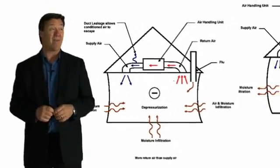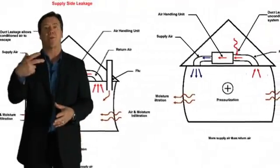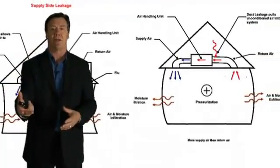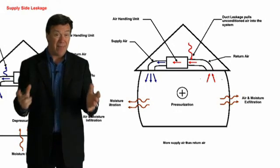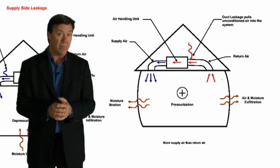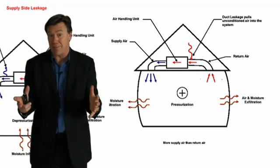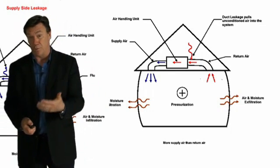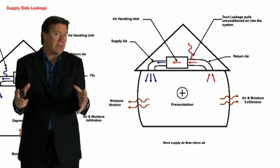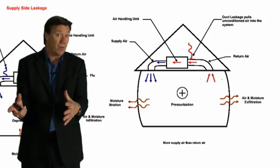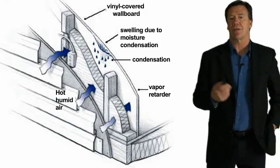Likewise, if we have return air duct leaks located outside the building envelope, just the opposite happens — the home is under a positive pressure. That's a problem in the winter months. Humidified air inside the home is forced out through all the cracks and gaps, and that warm moist air, when it comes in contact with the cold exterior sheathing or components, can condense and lead to mold problems.